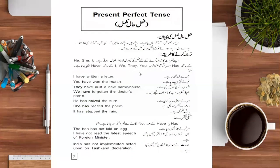For example: I have written a letter — you can see the third form of the verb. You have won the match. They have built a new home. We have forgotten the doctor's name. He has solved the sum. She has recited the poem. It has stopped the rain. So the structure is: subject, then has or have, then third form of verb, then object.